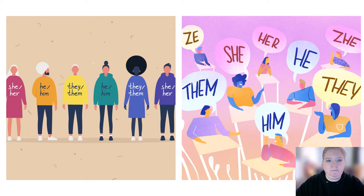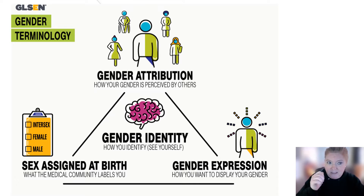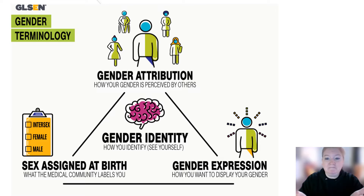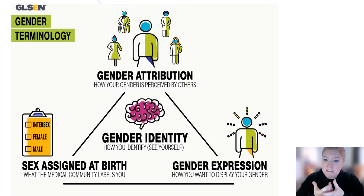We can look at it like this: sex assigned at birth is the box the medical community labels you with. Gender identity is how you see yourself. Gender expression is how you display your gender to the world. And gender attribution is how people perceive your gender — and they may misgender you, which is something some people need to get better about.